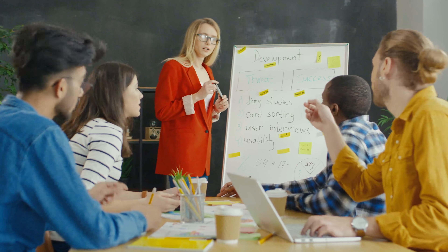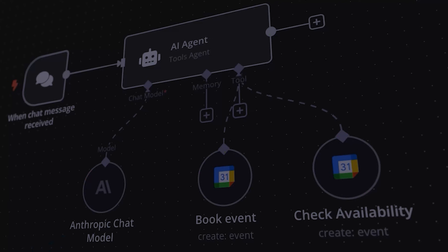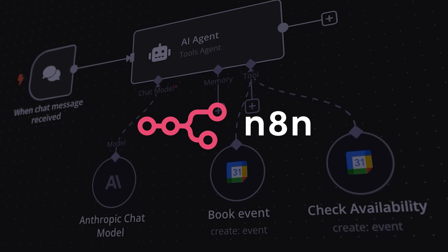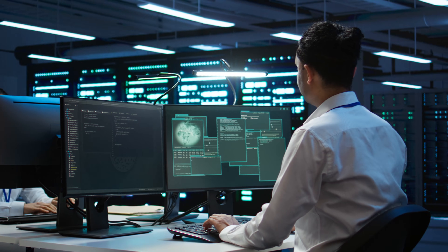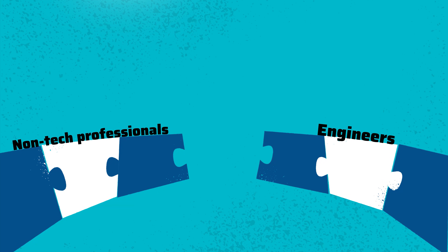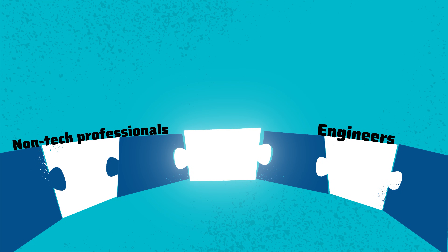In many cases, however, combining both approaches is often the best choice. Say you are a marketing person with an amazing idea to automate your marketing workflow — you can use N8N to build a prototype and roll it out to a few users to validate your idea. And once it looks good, an AI engineer can use a code-based framework to build a production-grade, highly scalable system. This bridges the gap between non-tech professionals and engineers so they can work together.